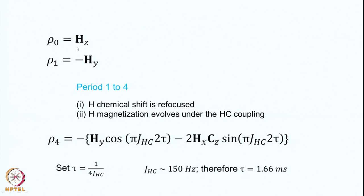At time point 0, we consider the density operator which consists of the proton magnetization along the z axis, which we call Hz. Do not confuse this with the Hamiltonian — this is the operator for the proton z magnetization. When I apply a 90x pulse on the proton channel, there is no pulse applied on the carbon channel, so the carbon magnetization along z is unaffected. Therefore we write only the proton magnetization, and after the pulse we get ρ1, which is minus Hy.